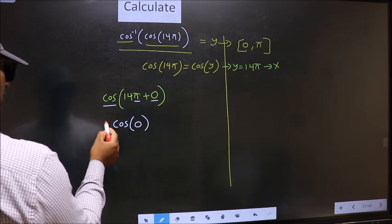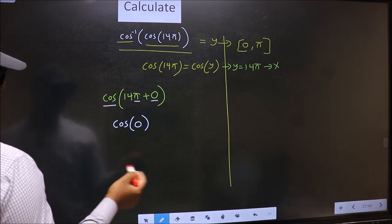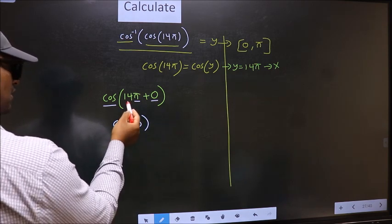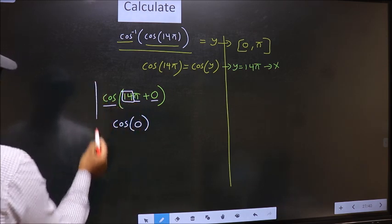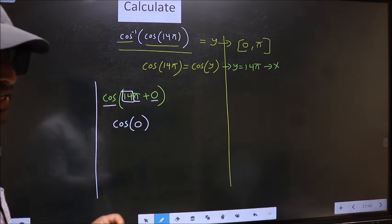Now the question is, will we get here plus or minus? To answer that, we should look at the number before pi which is 14. And 14 is even.